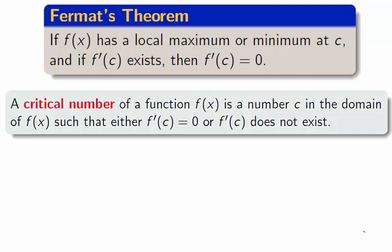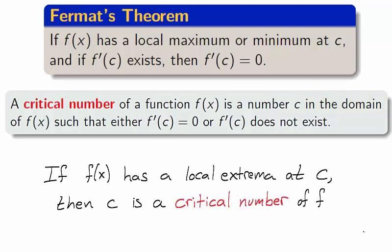With Fermat's theorem in mind, we define a critical number of a function to be a number c in the domain such that either the derivative does not exist or is zero. Just a word of warning. It is common for students to hear only the phrase does not exist or is zero. Be sure to note that a critical number must be in the domain. With this terminology applied to Fermat's theorem, if a function f has a local extrema at c, then c is a critical number of f.